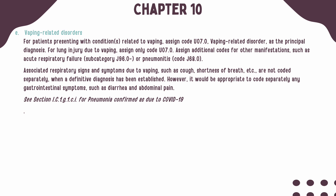When a patient has a vaping-related disorder, code U07.1 should be assigned as the principal or first-listed diagnosis. When a lung injury due to vaping is present, only assign U07.0. Additional codes may be needed to identify manifestations such as acute respiratory failure or pneumonia. Associated respiratory signs and symptoms such as cough, shortness of breath, and wheezing should not be coded separately.